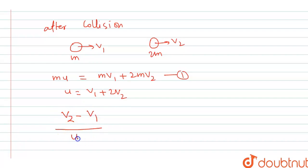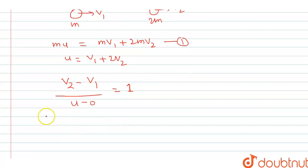So if we solve it further, we will get v2 is equal to u plus v1. Let's just call it equation 2.